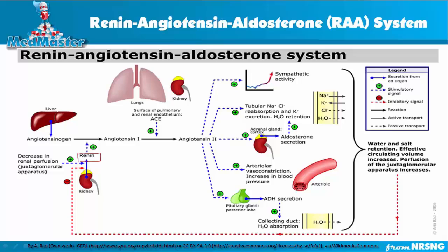What renin does is convert angiotensinogen — a protein in the inactive form in our blood — into angiotensin 1. So the work of renin is to convert angiotensinogen to angiotensin 1.